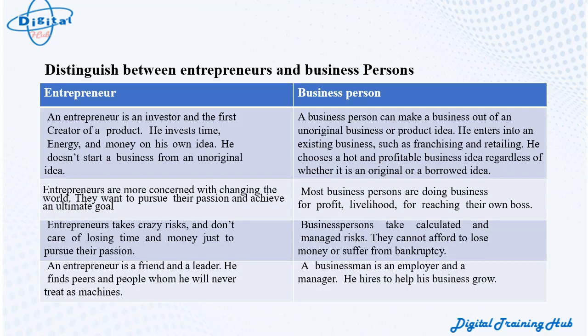Distinguish between entrepreneurs and business persons. An entrepreneur is an investor and the first creator of a product. He invests time, energy, and money on his own idea and does not start a business from an unoriginal idea. A business person, on the other hand, can make a business out of an unoriginal business or product idea. He enters into an existing business, such as franchising and retailing, and chooses a hot and profitable business idea regardless of whether it is original or borrowed.